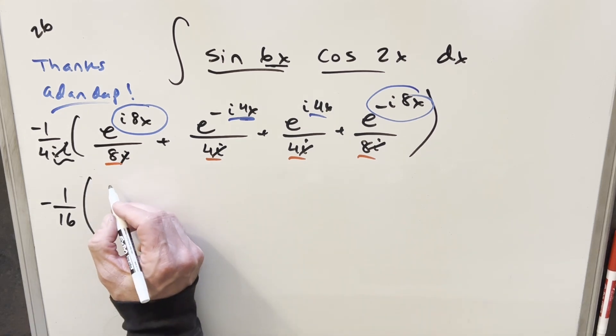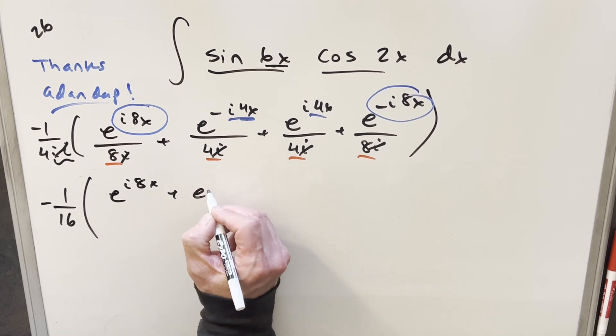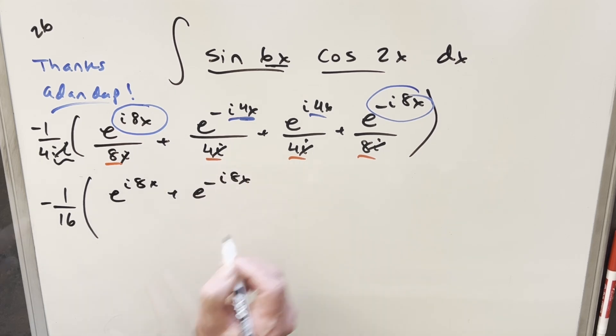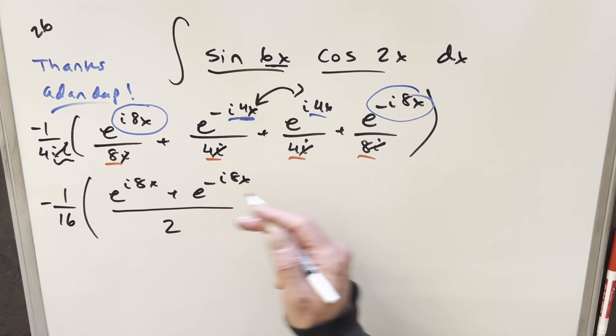So when I rewrite it here, we'll have e^(i8x) plus e^(-i8x). And now on these, we factored out a 4. So I'm going to end up with a 2 in the denominator here.